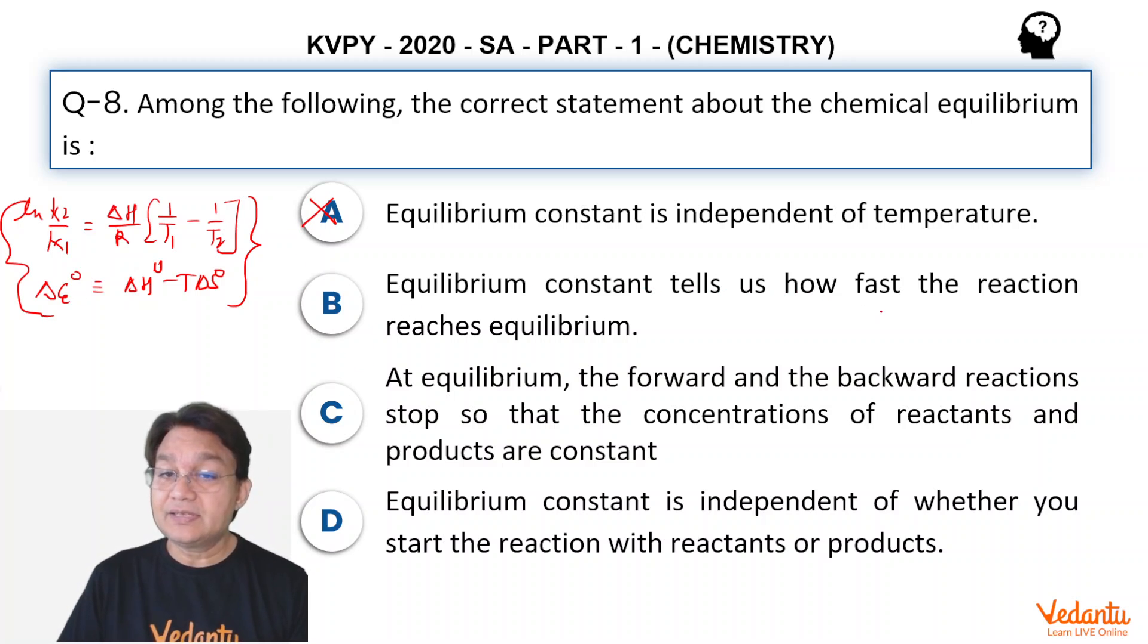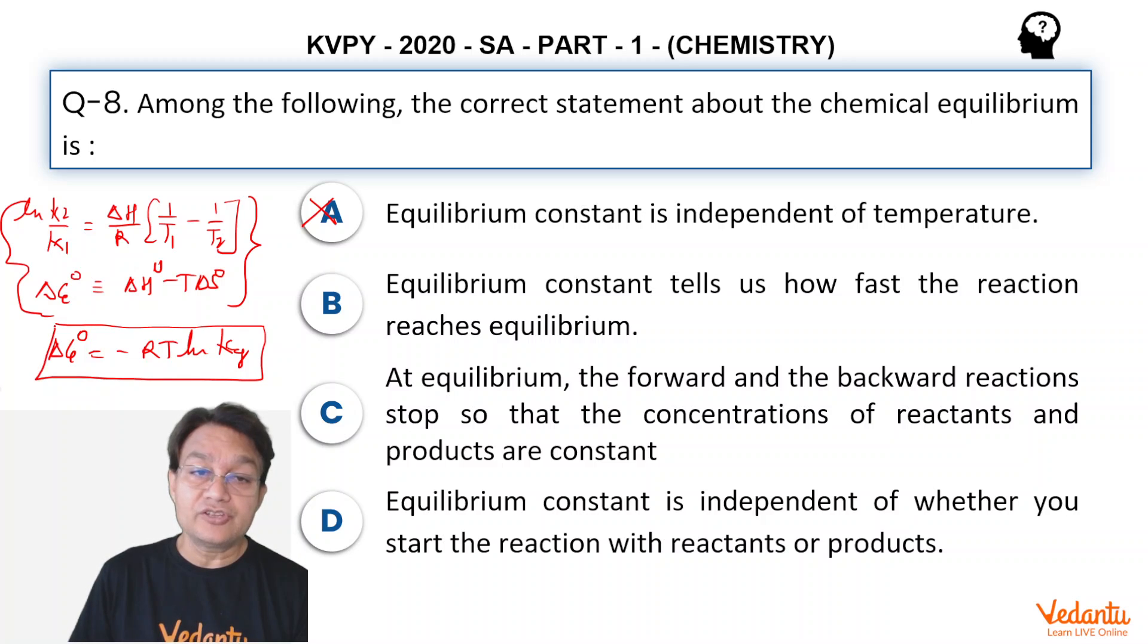Equilibrium constant tells us how fast the reaction reaches equilibrium. That's also absurd because in this equilibrium constant expression, delta G⁰ equals minus RTlnK equilibrium. Do we have anything like rate of this expression of rate of reaction? No. So equilibrium constant could not predict how fast reaction reaches equilibrium. It only predicts the amount at equilibrium or the amount of reactant and product, relative amount of reactant and product at equilibrium.